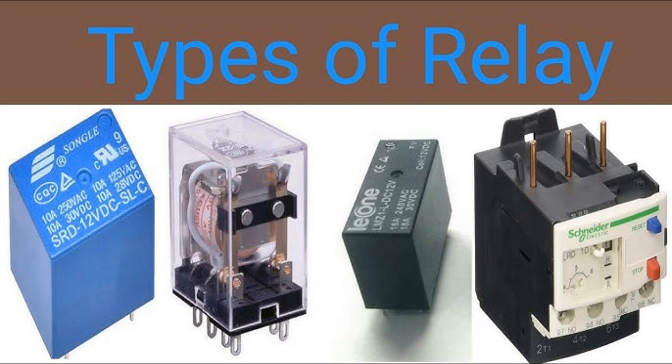Working principle: When current flows through the coil, it creates a magnetic field. This magnetic field magnetizes the reed switch's contacts, causing them to attract each other and close the circuit if they are normally open. Once the current in the coil is switched off, the magnetic field dissipates, and the contacts return to their original positions due to their natural elasticity or an internal biasing magnet, breaking the circuit.